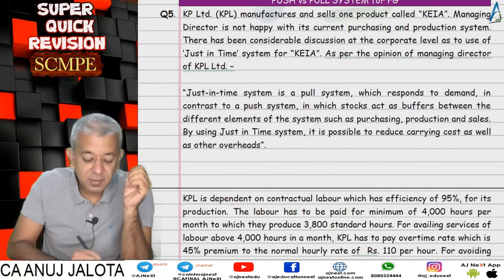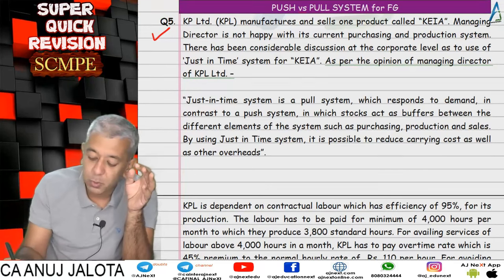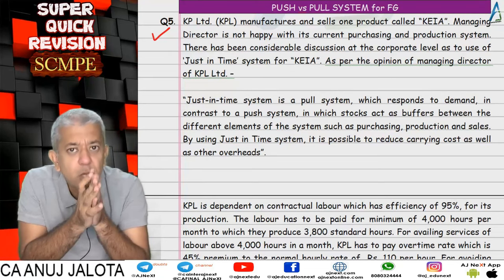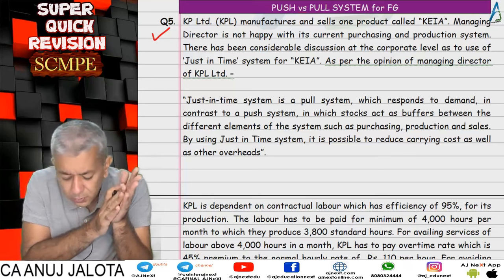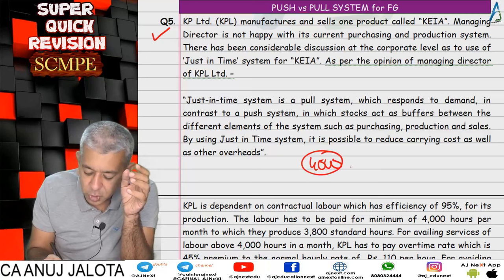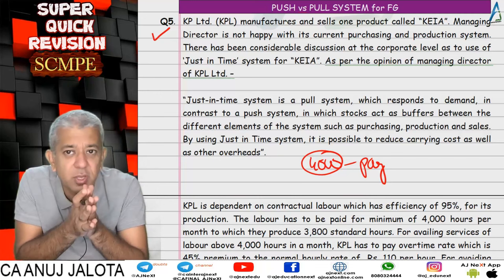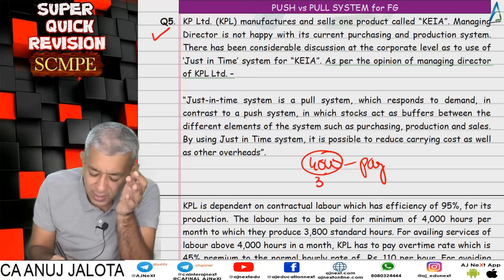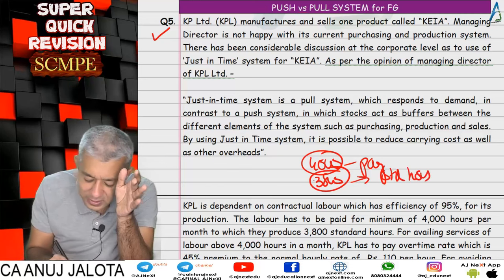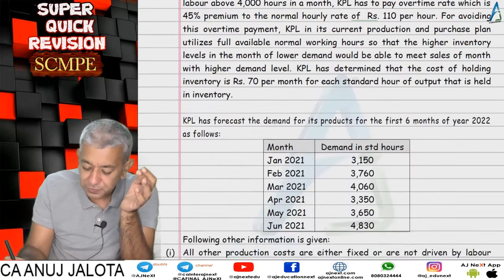Question number 5 is about the push system and the pull system. Under the push system there will be stocks; under the pull system (JIT) there will generally not be any stocks. A company tells its workers to work for 4,000 hours guaranteed, paying them for 4,000 hours. However, workers are not fully efficient — by working 4,000 hours they produce only 3,800 standard hours of output. So their efficiency ratio is 95 percent.